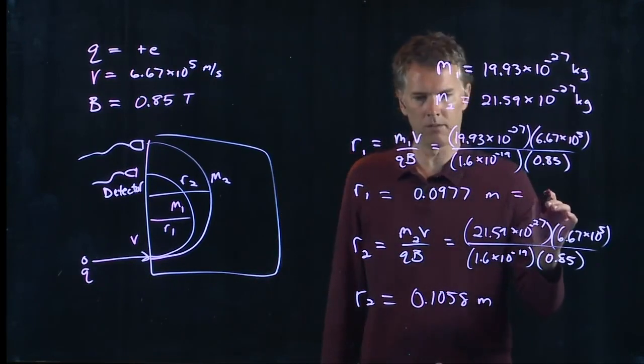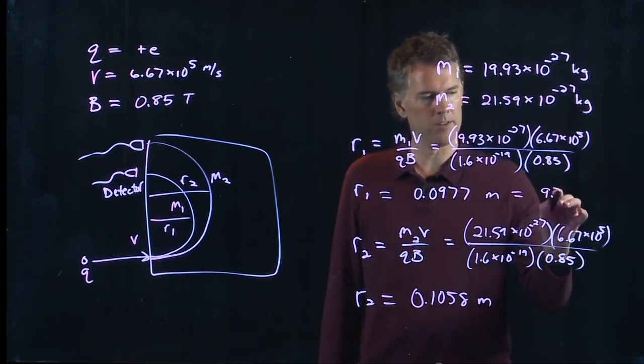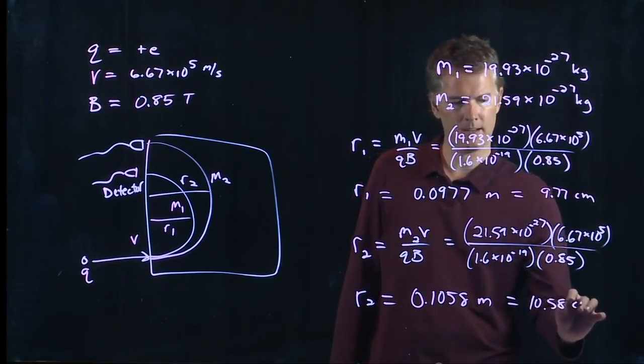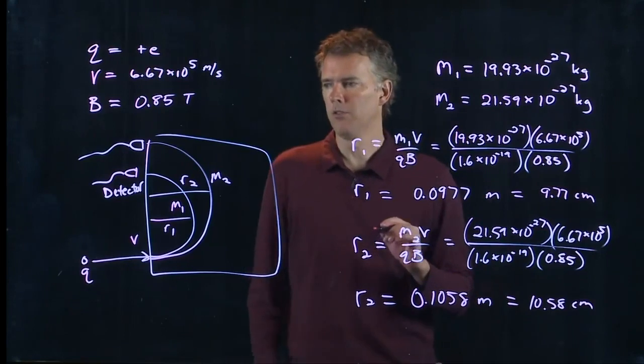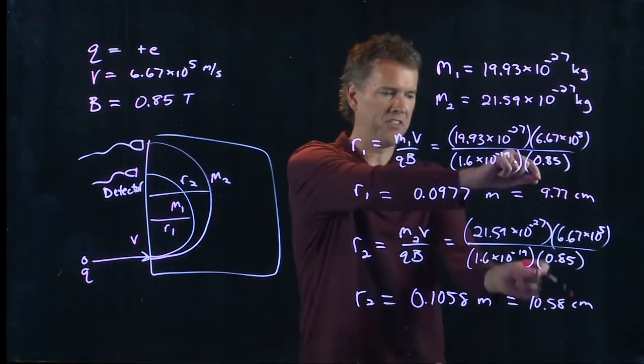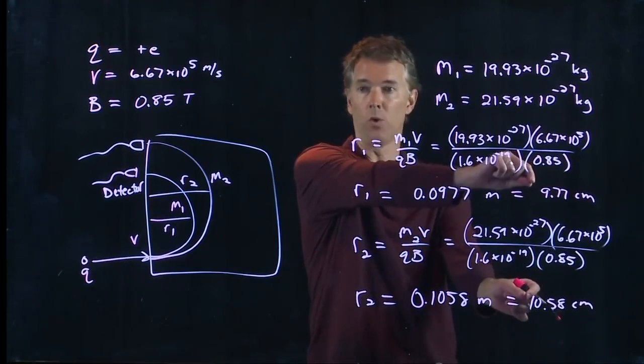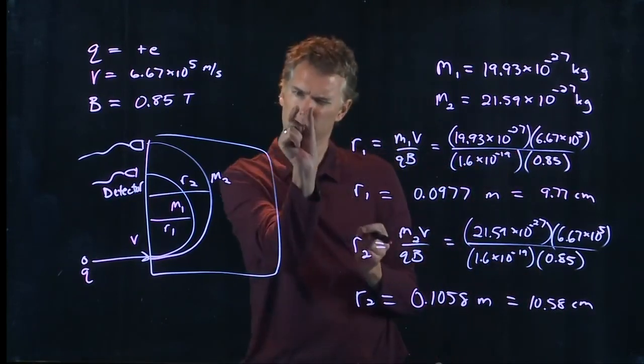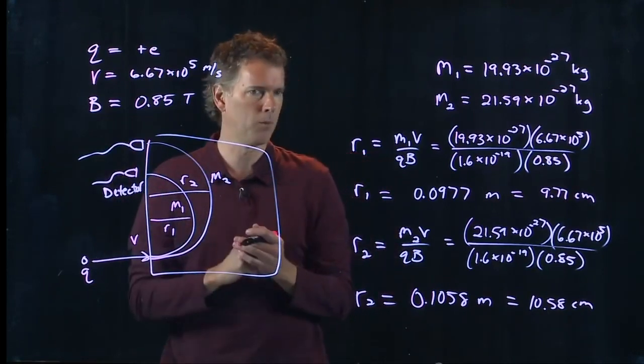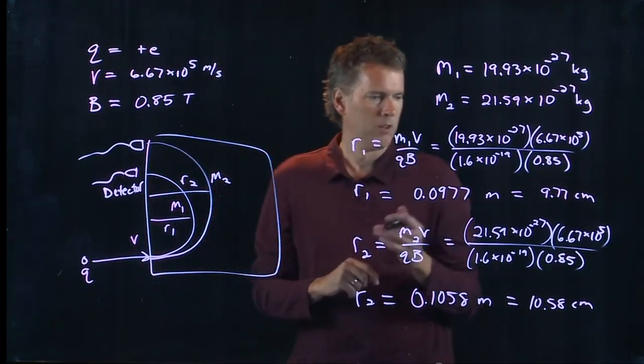So this one is 9.77 centimeters. This one is 10.58 centimeters. That tells you that your detectors need to be separated on the order of one centimeter. One centimeter is about like that. That seems pretty reasonable. It seems like you could do that with real detectors.